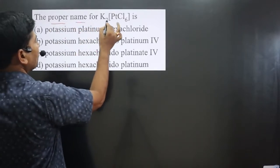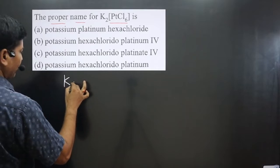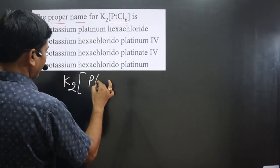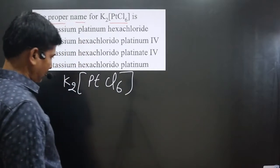The question asks for the proper name for the complex. Let me write this complex: we have K₂[PtCl₆].